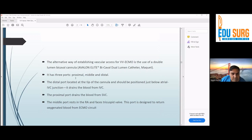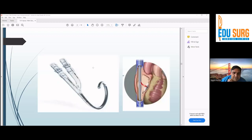So alternative way is the Avalon cannula. I don't know if someone has used this before. I never used it, but it has three ports: proximal, middle, and distal. The positive point with Avalon cannula is you just have to use one cannula. You don't have to puncture two venous sites. You can just do right internal jugular. The distal port is located just below the atrial-IVC junction and drains blood from the inferior vena cava. The proximal port drains blood from the superior vena cava. The middle port rests in the right atrium. This is important: it should face the tricuspid wall. It returns oxygenated blood from ECMO circuit.